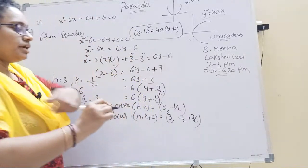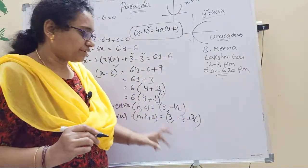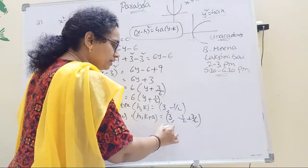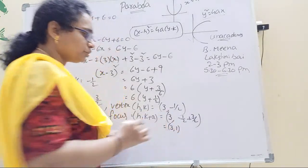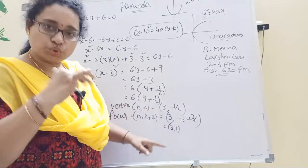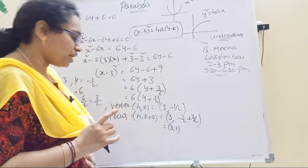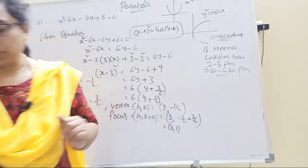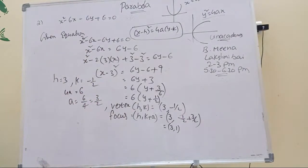Simplification: 3, minus 1 by 2 plus 3 by 2. 2 by 2 is 1. 3 minus 1 is 2, 2 by 2 is 1. Answer is 3, 1. Focus is 3, 1. This is the completed problem.